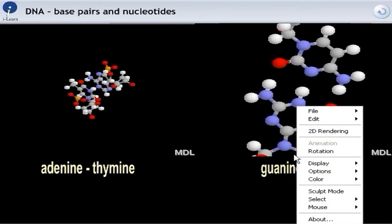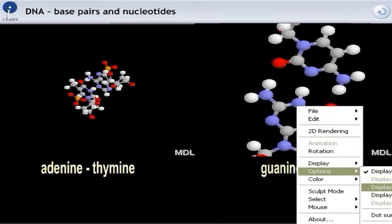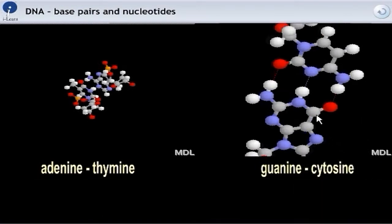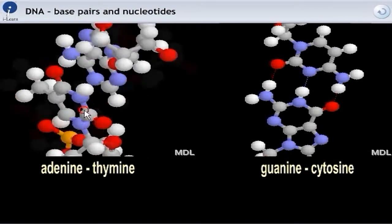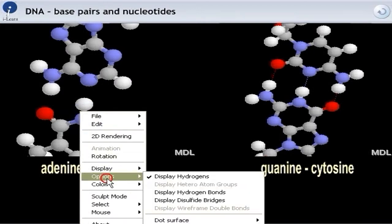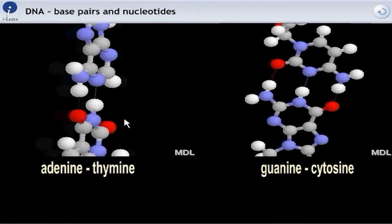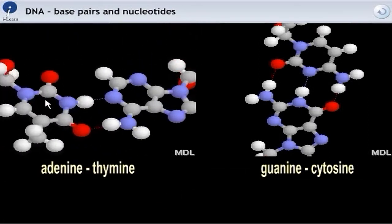If I come in a bit closer and then go options, display hydrogen bonds, you'll see three dotted lines on this pair of bases. And on the other one, let's bring it in a bit closer. Right click, options, display hydrogen bonds, you'll see two hydrogen bonds.